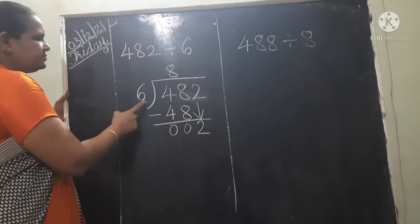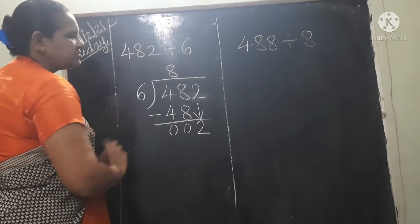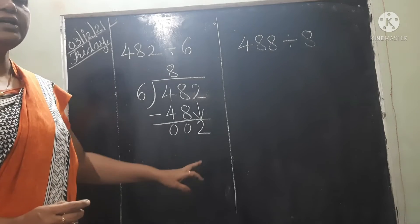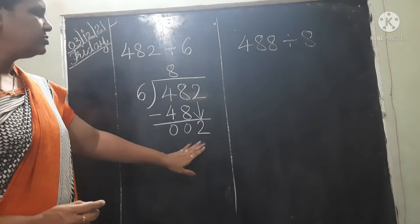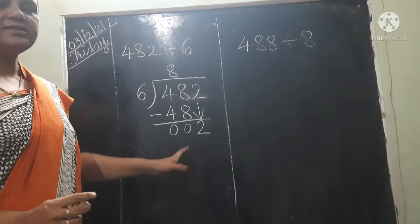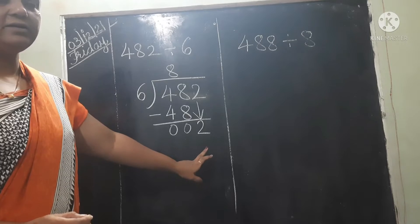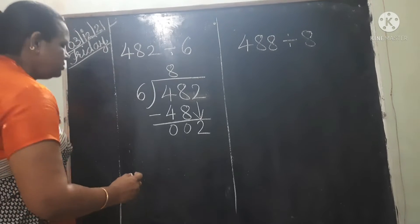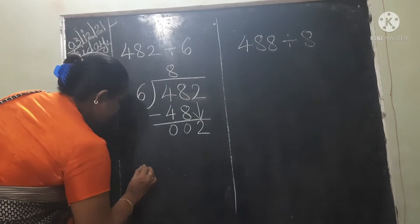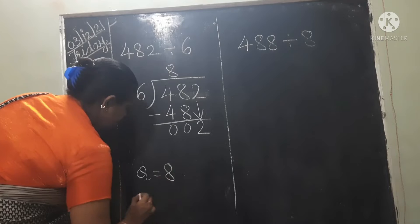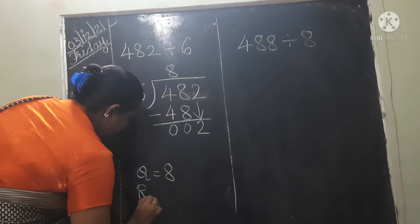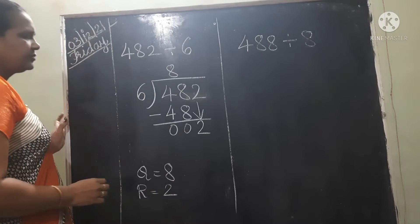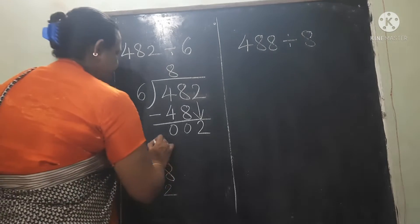Now here 6 is big and 2 is small, so we can't do any division with 2. So our answer is completed with remainder 2. The quotient is 8 and the remainder is 2. This one is finished.